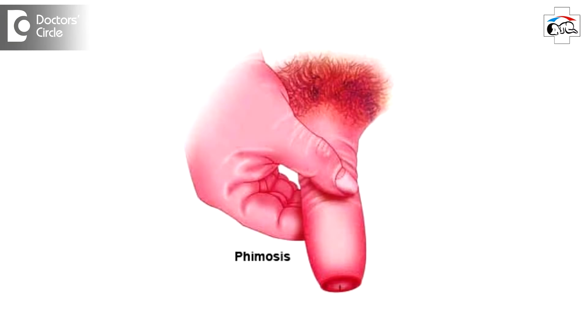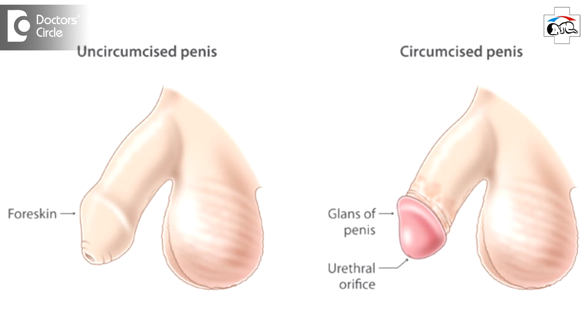In some children — in the male child — there can be a smaller opening of the penis; this is known as phimosis. This can cause pain during micturition and local inflammation at the tip of the penis. If the condition persists, it is better to get surgical treatment of the extra skin, and this is known as circumcision.